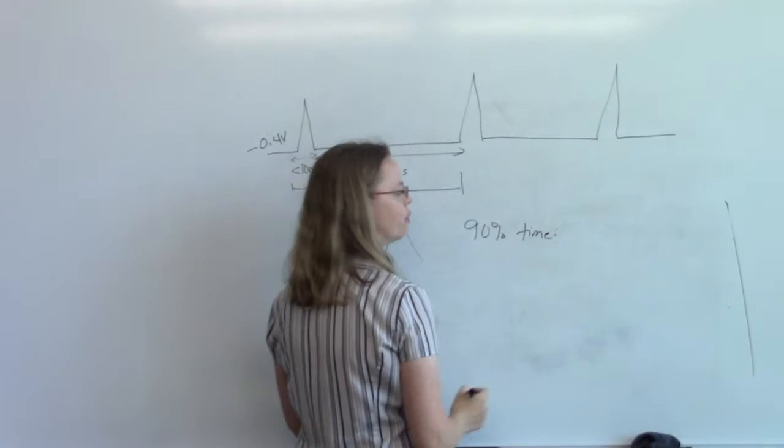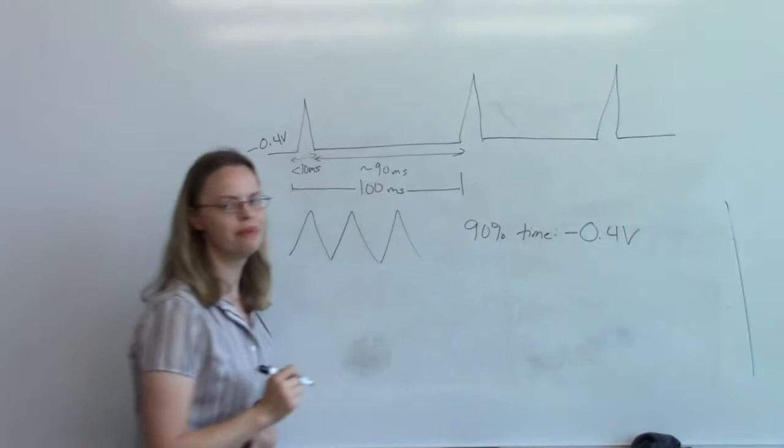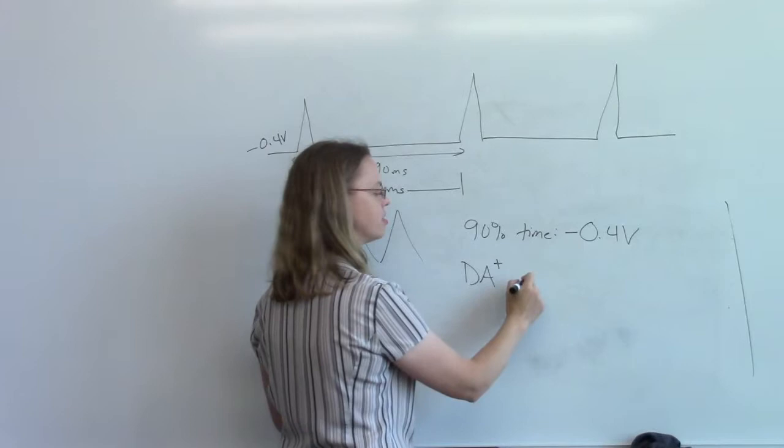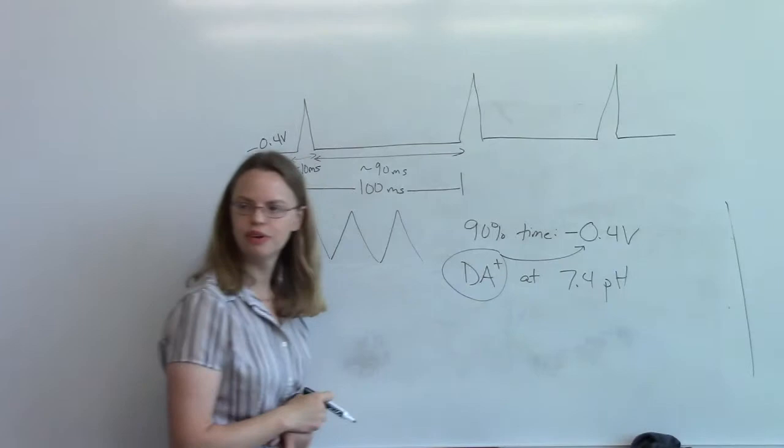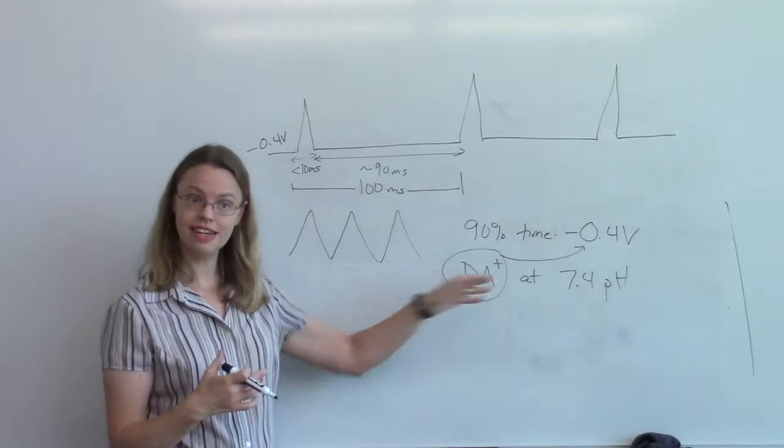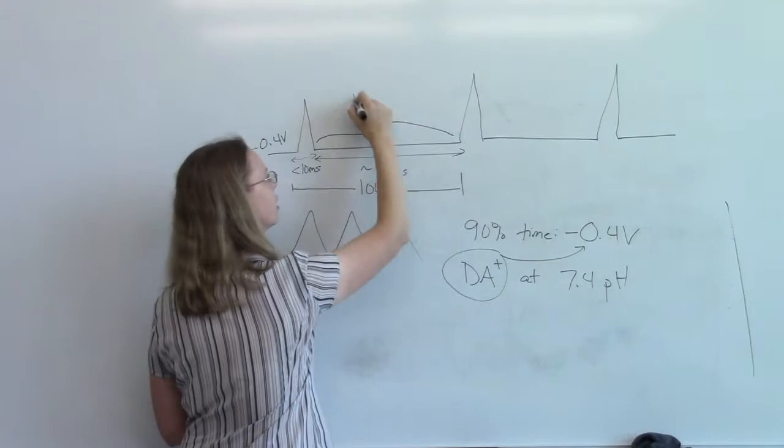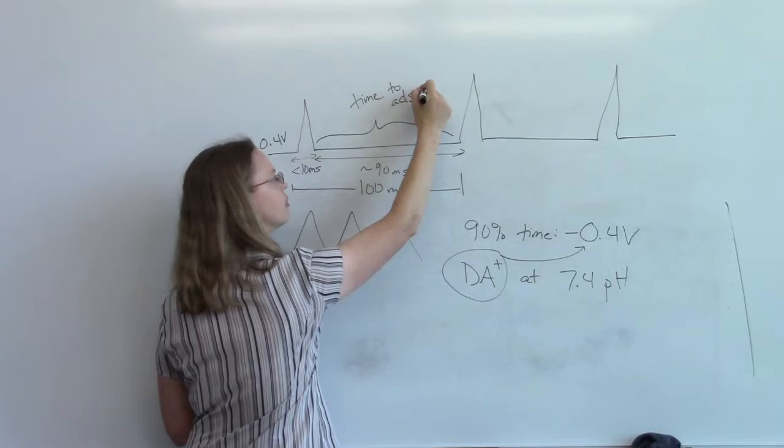And I haven't been drawing dopamine exactly correctly. It turns out that dopamine is actually positively charged at our physiological pH 7.4. So if it's positively charged, you can see that it would be really attracted to a negatively charged electrode. And so it would want to stick to that electrode. So what are we doing?